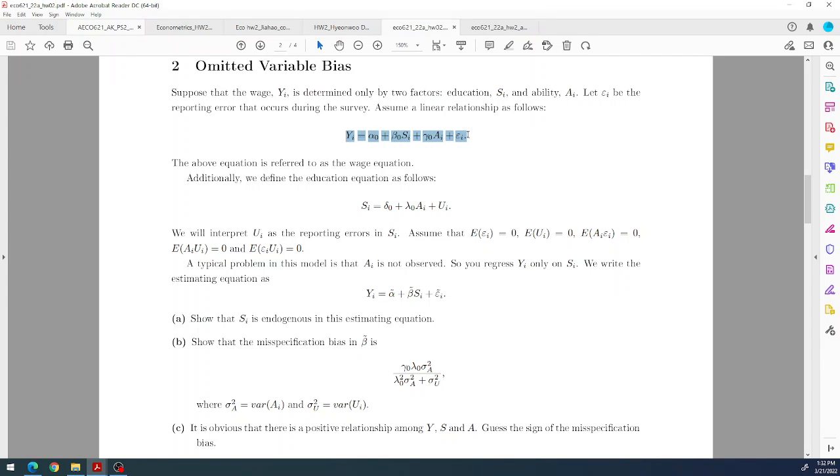This is the true model, and this is another true model. We consider that when you choose whether to attend college, for example, you take into account your ability. So ability must affect your education decision. These two equations make a system of equations that we assume. This is the estimating equation you have to handle because S is the only variable you have. So you have no other choice but estimating this, then you have to study if this is correct or not.